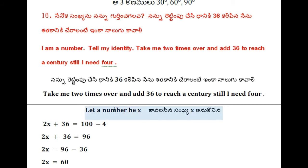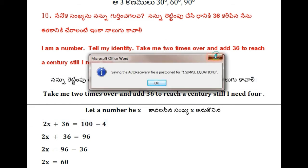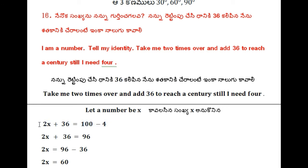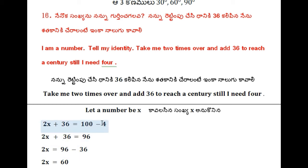16th problem: Let a number be taken as x. If it is doubled, it becomes 2x. And 36 is added to the product. The result equals 96, because 4 more is needed to reach a century — 100. So: 2x plus 36 is equal to 96.